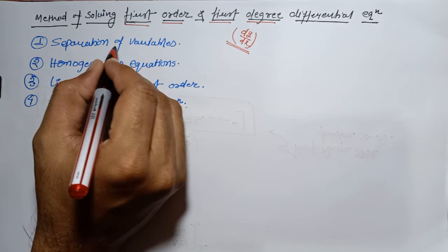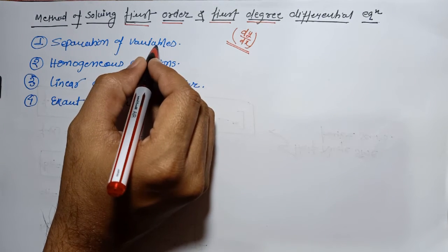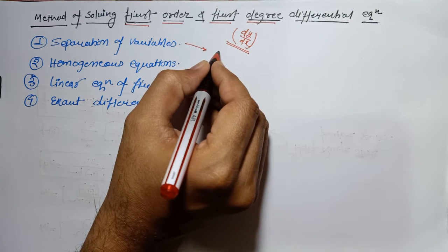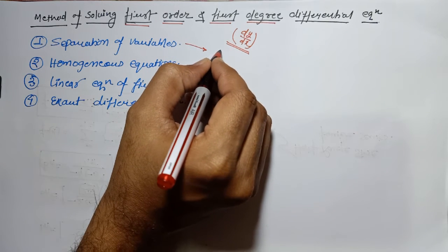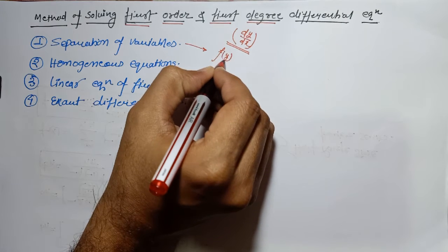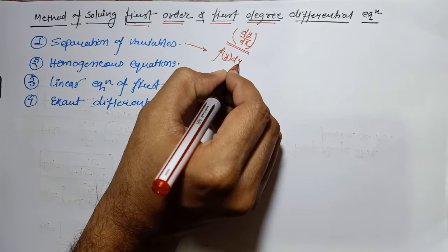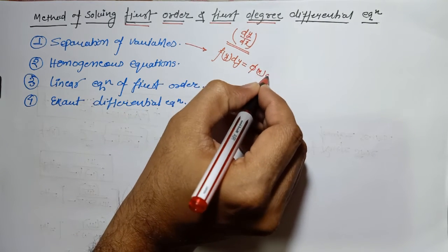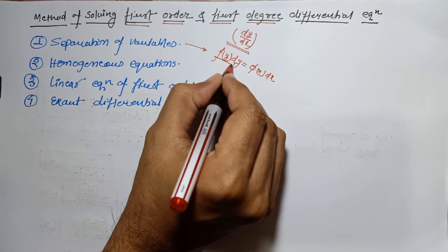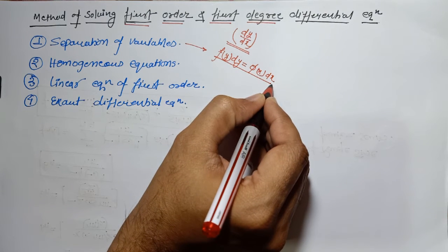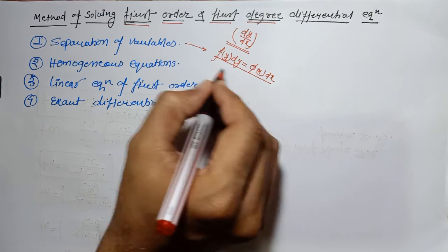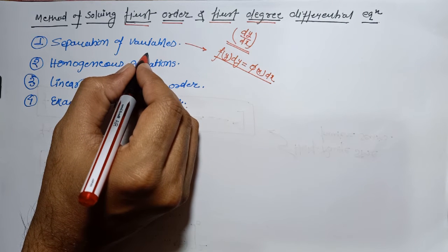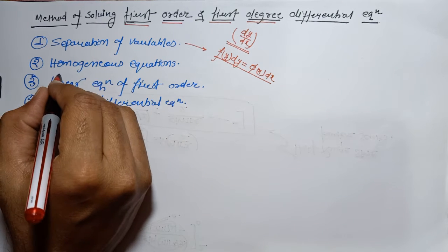The first method is separation of variables. If any differential equation can be written in the form of f(y) dy = g(x) dx, then this type of differential equation can be solved using the separation of variables method.